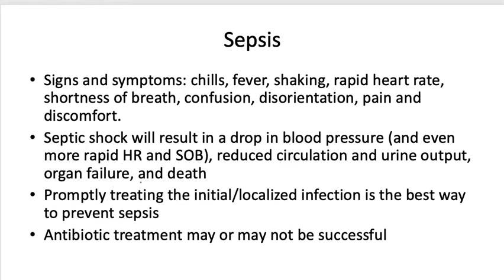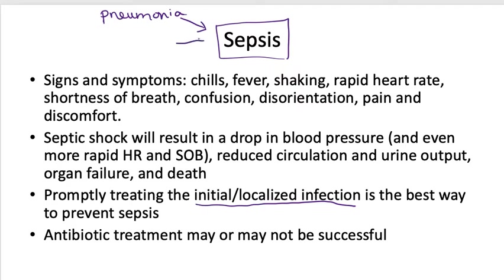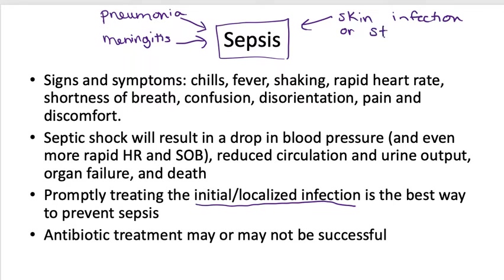Patients in septic shock experience a rapid drop in blood pressure, resulting in an even more rapid heart rate and shortness of breath. Reduced circulation results from that drop in blood pressure, along with a reduction in urine output, soon leading to organ failure and death. Most cases of sepsis come from an initial infection somewhere else — such as pneumonia, meningitis, skin infections, or strep throat. Strep throat can lead to rheumatic fever when bacteria infect the heart valves, and those bacteria can also get into the bloodstream.